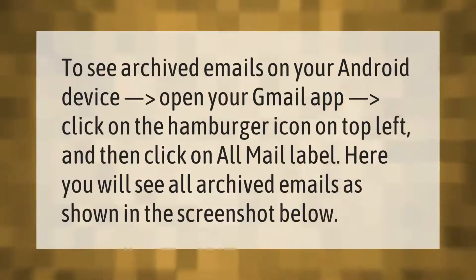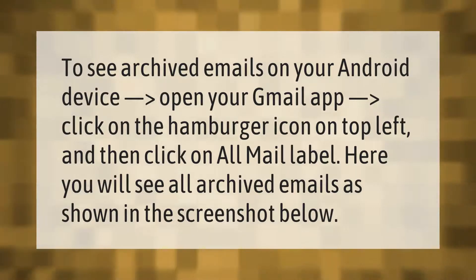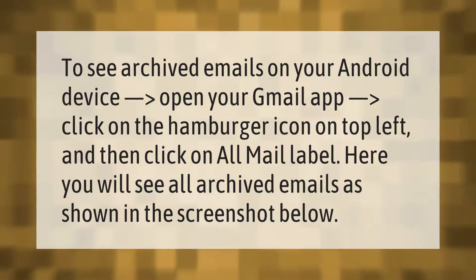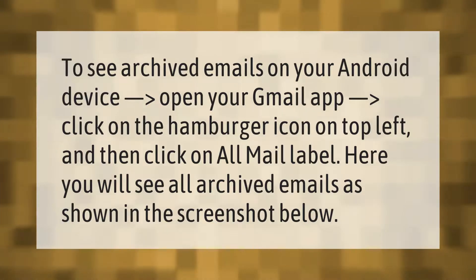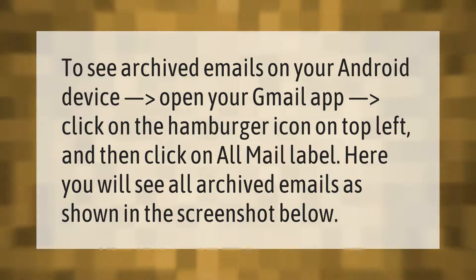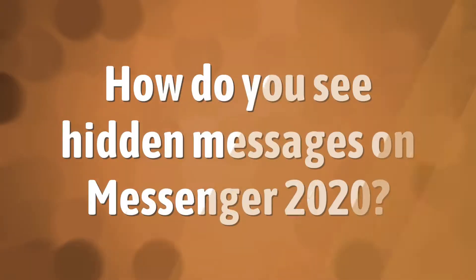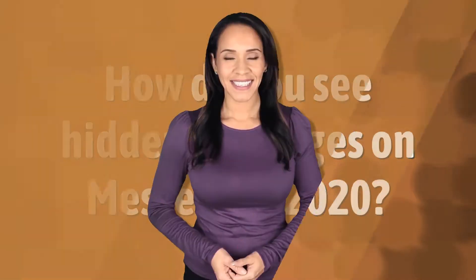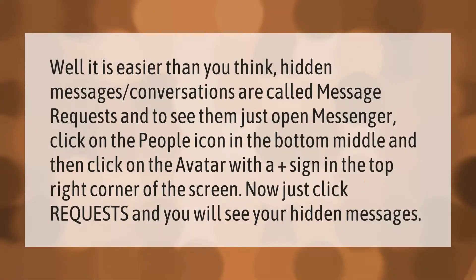To see archived emails on your Android device, open your Gmail app, click on the hamburger icon on the top left, and then click on the All Mail label. Here you will see all archived emails, as shown in the screenshot below.